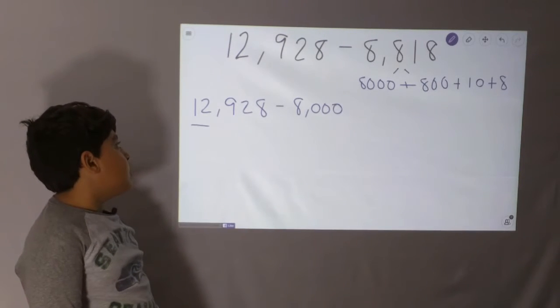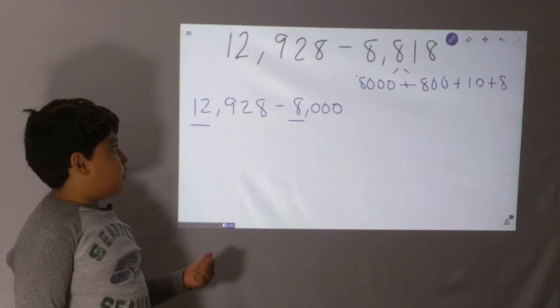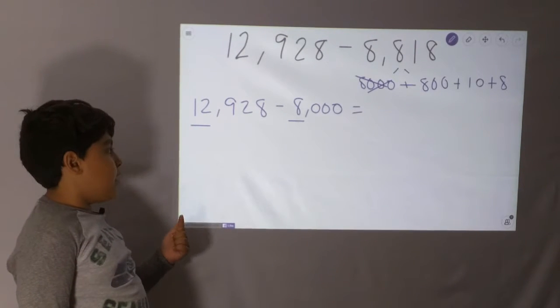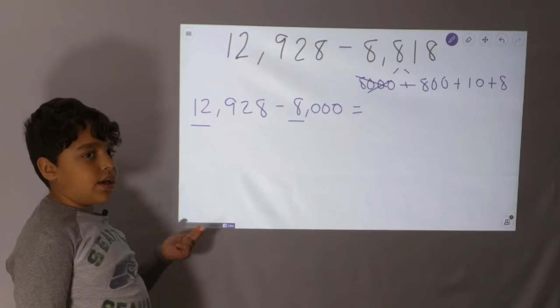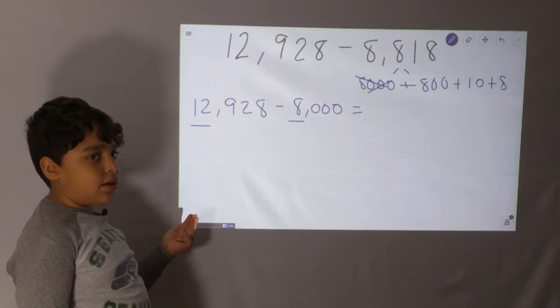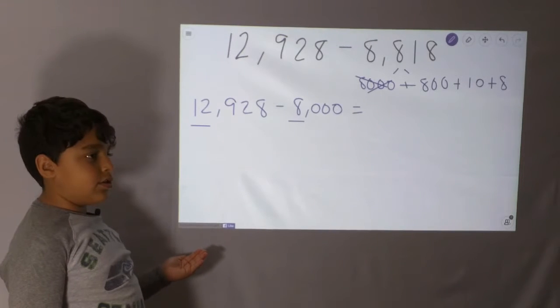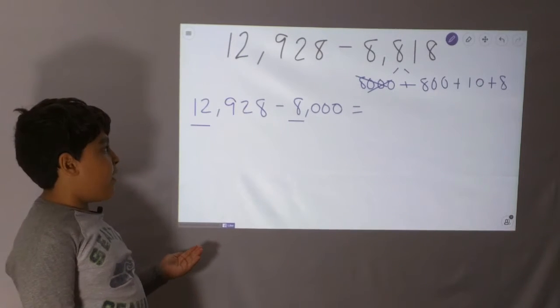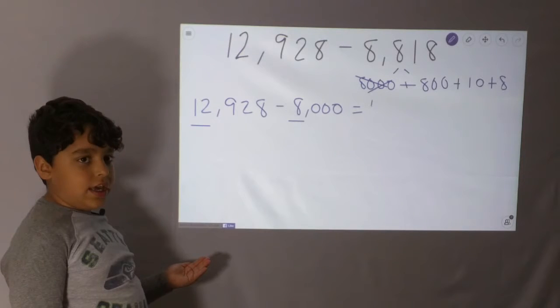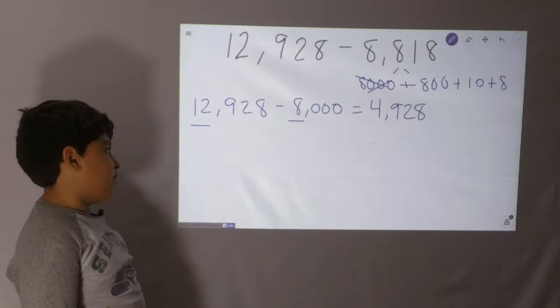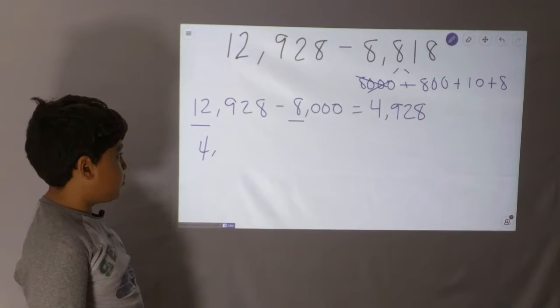So, 11,928, 10,928, 9,928, 8,928, 7,928, 6,928, 5,928, 4,928. So, the answer is 4,928.